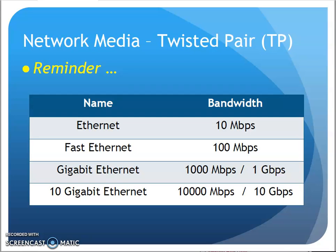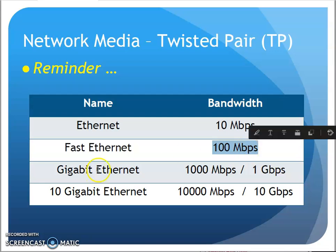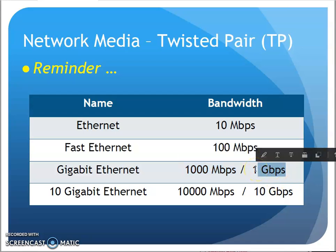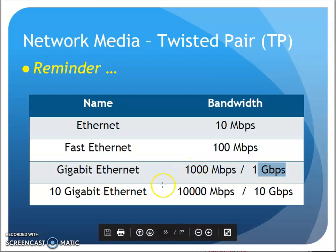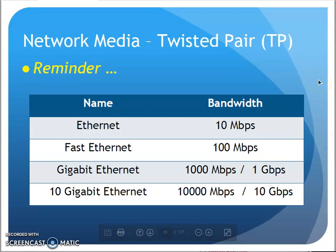Before we get into twisted pair, let's remember these terminologies: Ethernet, Fast Ethernet, Gigabit, and 10 Gig Ethernet. Ethernet is 10 megabit. Fast Ethernet is 100 megabit. Gigabit is 1,000 megabit — that's your billion bits per second, your gigabit. And 10 Gigabit would be your 10,000 megabit, or 10 gig. Remember those terminologies. When I see Ethernet, think 10. Fast Ethernet, think 100. Gigabit, think 1,000 meg. All right, next we'll start talking twisted pair.